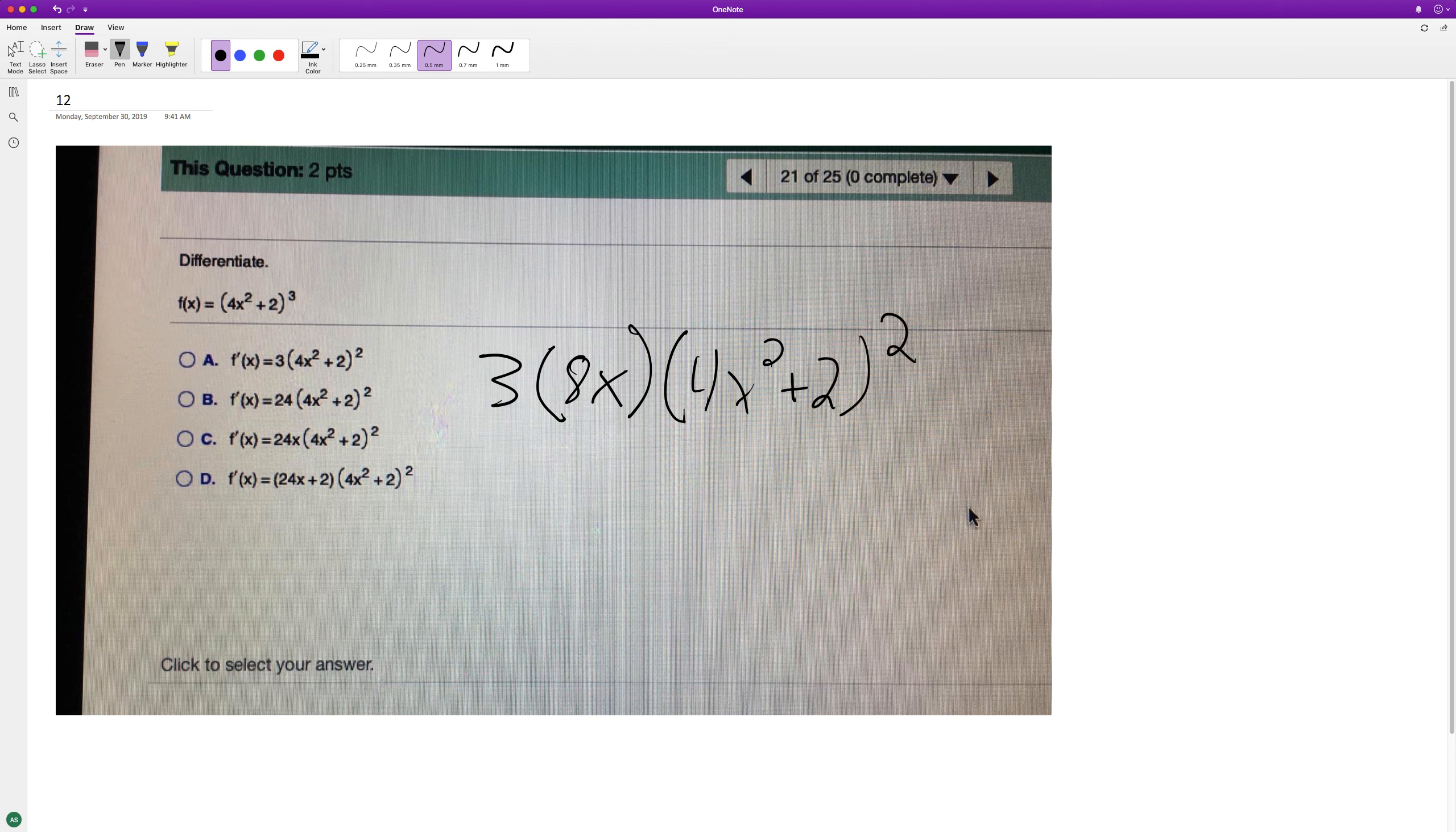So we could foil this whole thing out, but we don't really need to. If we multiply the 3 out, so we get 24x times quantity 4x squared plus 2 squared.